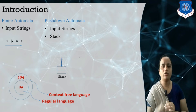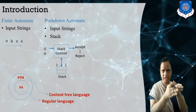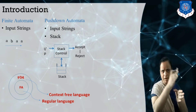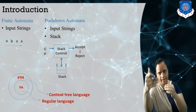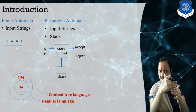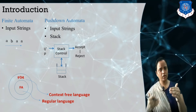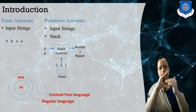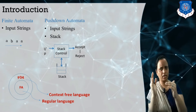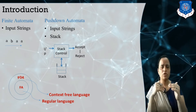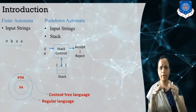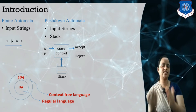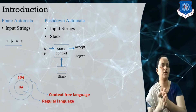Now, how is this stack used? When reading input strings, we read the input string from left to right one character at a time, and at the same time we also read the topmost symbol of the stack. By using this, we change the state from one state to another state — we make the decision in the control portion. At the end, if we reach the final state, we can say whether this string is accepted or rejected.